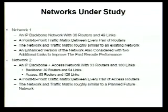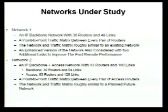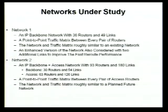We considered two networks. Network 1 is an IP backbone network with 36 routers and about 49 links, with a point-to-point traffic matrix between every pair of routers, roughly similar to an existing network. Network 2 is a combination of backbone and access network, similar to one we planned for the future. For Network 1, we also wanted to see if we can tweak the topology — add some links — and by doing that improve the convergence.